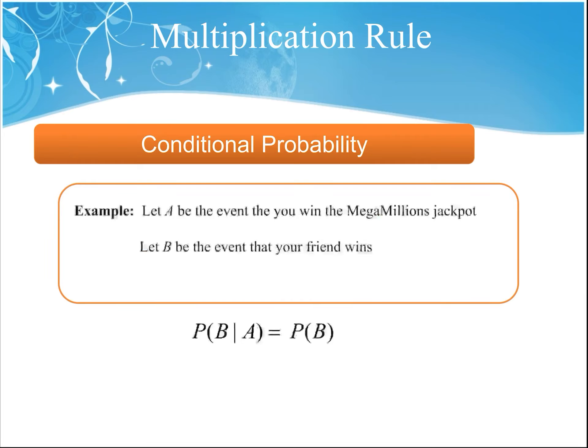Let's do another example. Let A be the event that you win the Mega Millions jackpot, and B be the event that your friend wins. When you're competing in the Mega Millions jackpot, your friend could pick the same numbers that you do — it's independent of what you've picked. So the probability that your friend wins, given that you have already won, is just the probability that your friend wins. Their event and your event are independent of each other.